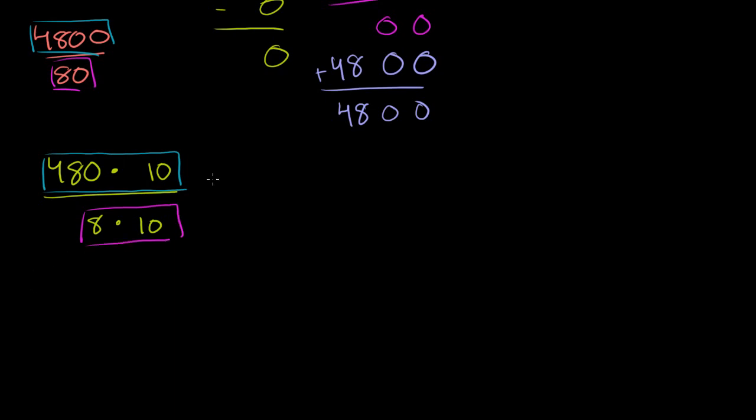Now, what happens here? We could view this as being equal to 480 over 8 times this 10 up here divided by this 10. Now, what's 10 divided by 10? What's anything, any non-zero number divided by itself? Well, this is just going to be 1. 10 goes into 10 one time. So we're just left with 480 over 8. So essentially, you can just knock off the same number of 0's off of the divisor as the dividend. So we knock off 1 0 here, 1 0 there. It becomes 480 divided by 8.